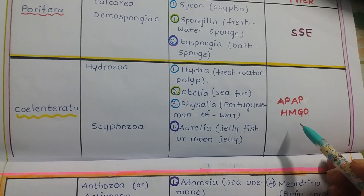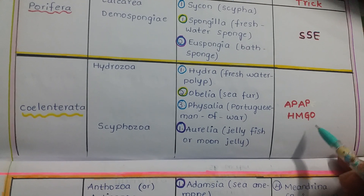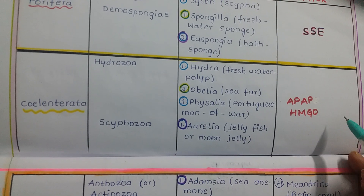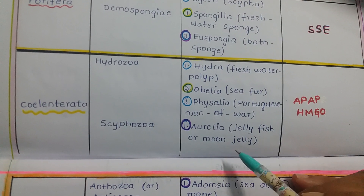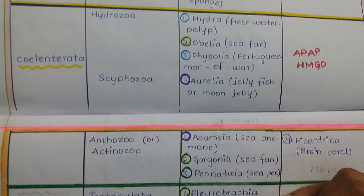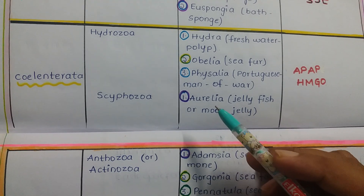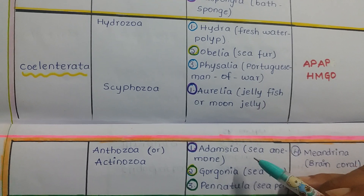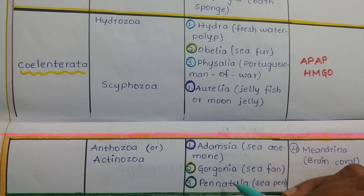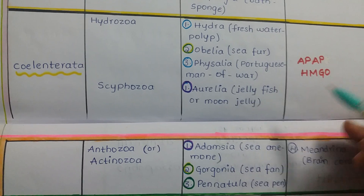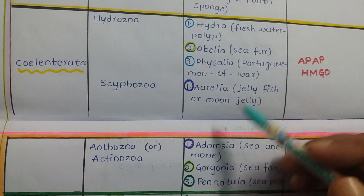AP stands for Andhra Pradesh and another AP for Arunachal Pradesh — we remember these with Indian states. The first AP: A for Aurelia (jellyfish/moon jelly) and P for Pennatula (sea pen). The second AP: A for Adamsia (sea anemone) and P for Physalia (Portuguese Man of War).